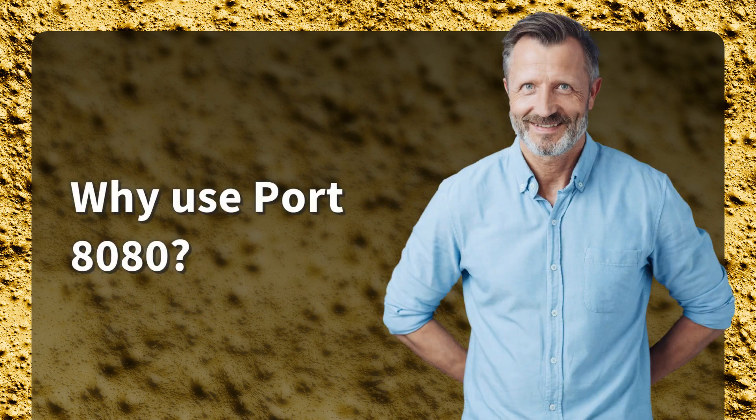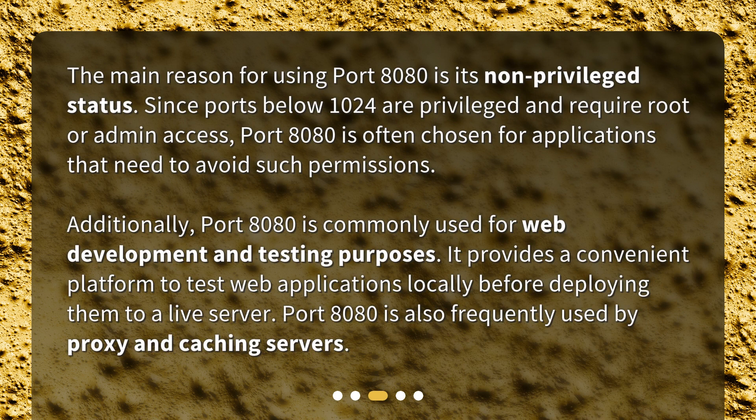Why use Port 8080? The main reason for using Port 8080 is its non-privileged status. Since ports below 1024 are privileged and require root or admin access, Port 8080 is often chosen for applications that need to avoid such permissions. Additionally, Port 8080 is commonly used for web development and testing purposes. It provides a convenient platform to test web applications locally before deploying them to a live server. Port 8080 is also frequently used by proxy and caching servers.